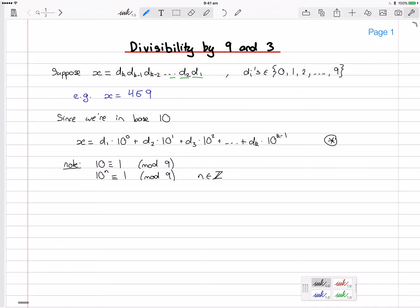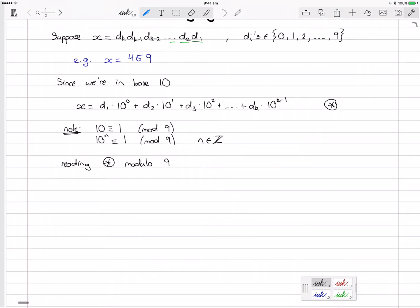So that's something very key to note and so now I can read my equation star. So reading star modulo 9 gives us the following. Let's move this up a little. Gives us that x is identical to, well 10 to the power 0 is already 1, so that's d1 times 1. Let's just put the 1 in anyway. Now as we said, 10 to the power 1, which is 10, is equivalent to 1 mod 9. So this is d2 times 1.